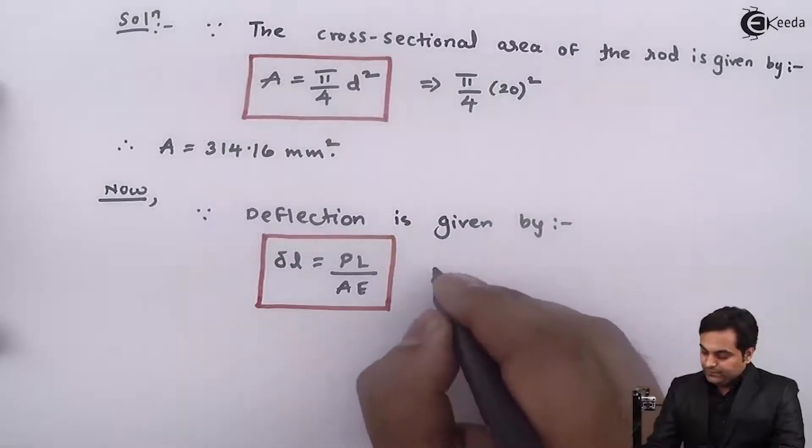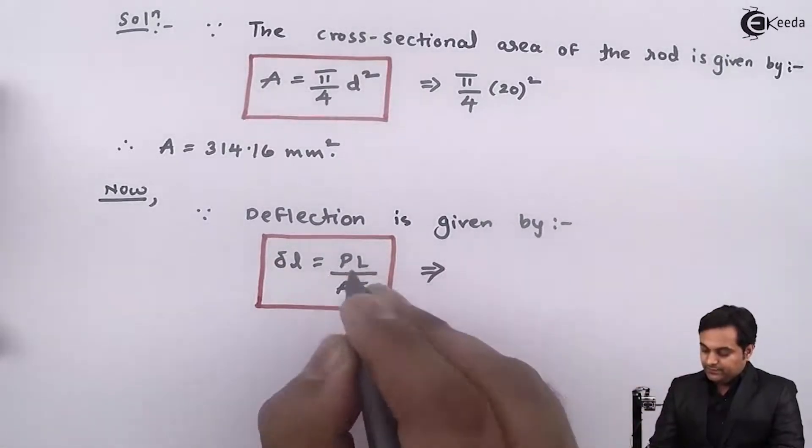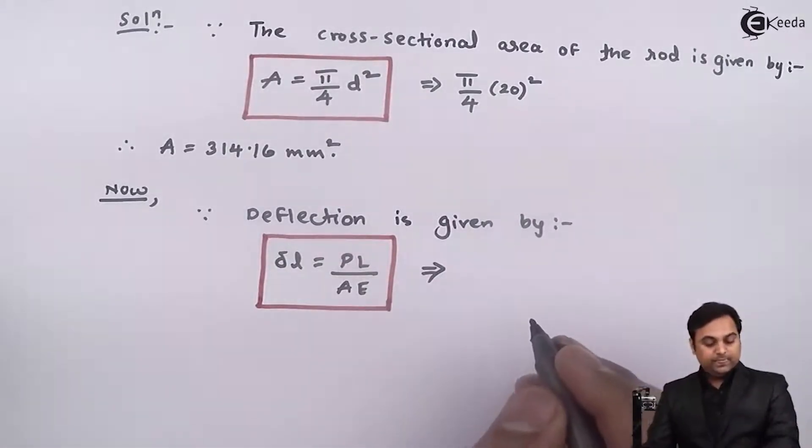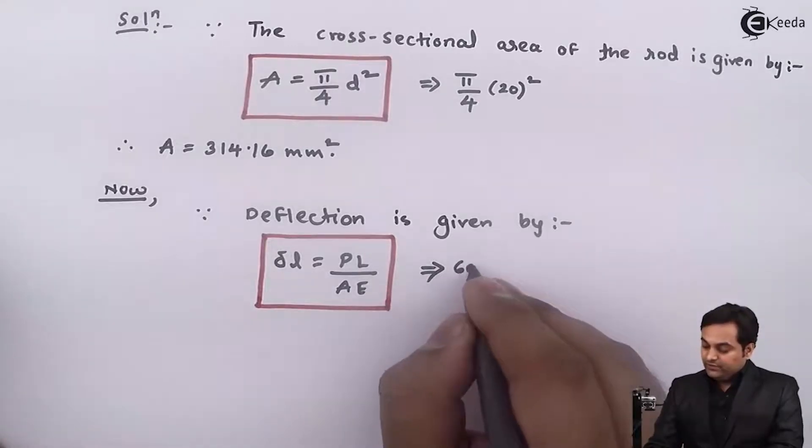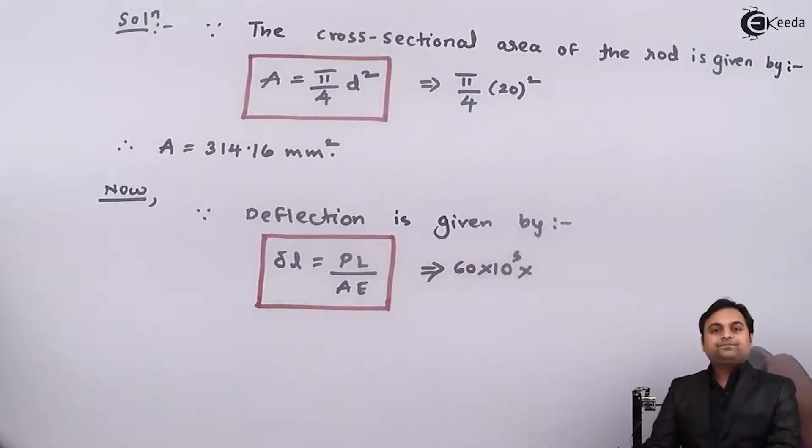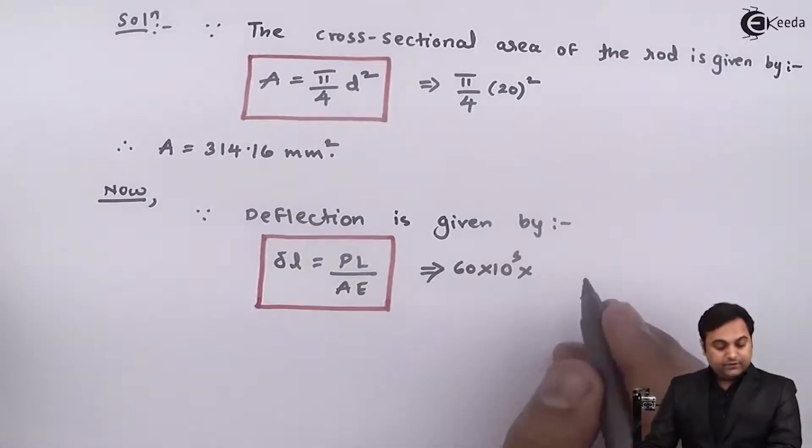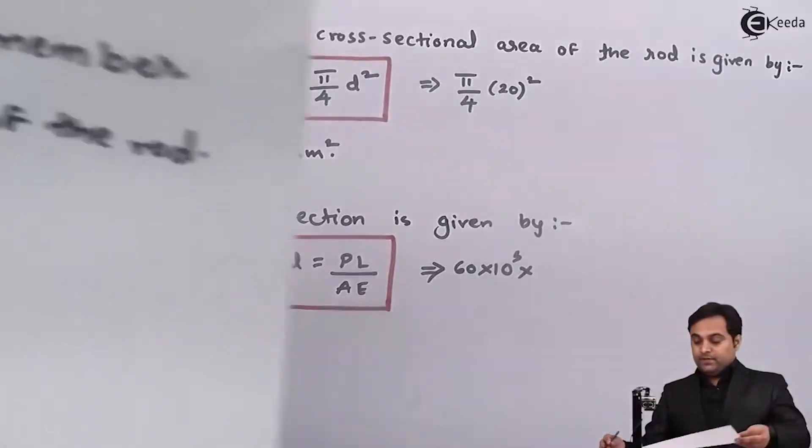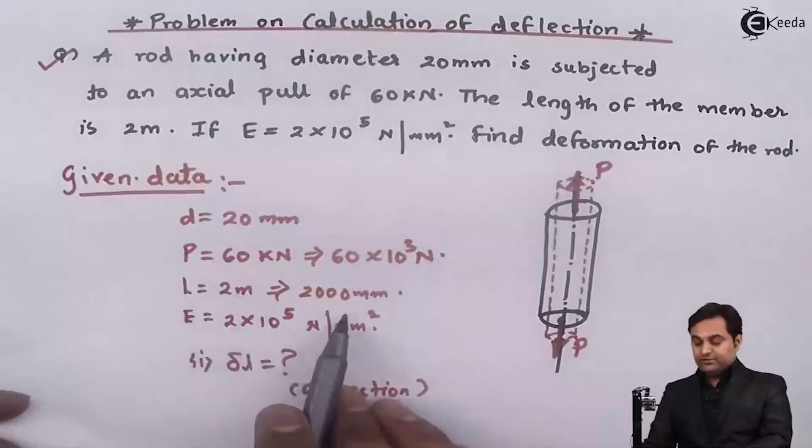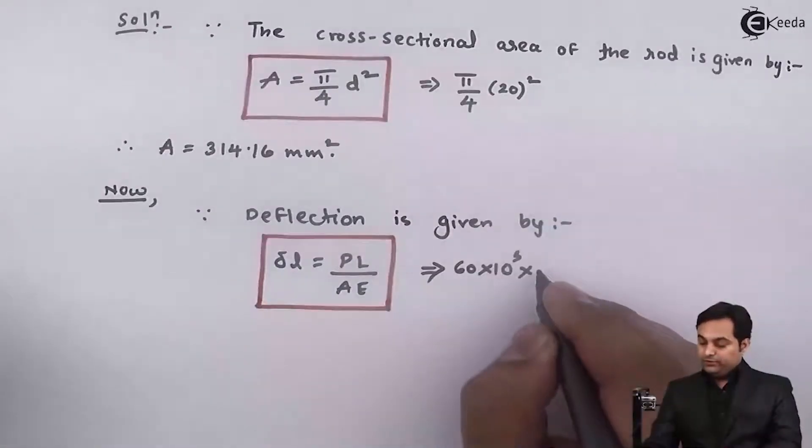So now I will go on putting the values. P, that is the load, it is 60 kilonewton given, so 60 into 10 raise to 3. Length of the member was given as 2 meters, so it is 2000 mm, into 2000.